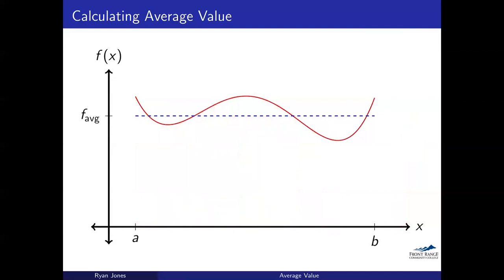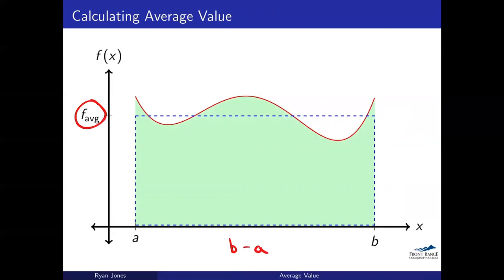If you were to take all the y-values for this function and averaged them, this is what you'd get — roughly the average height of the function. We can actually set up an integral and relate it to another area. I've got in green the integral of the function, and then in the blue dashed rectangle — that's just a rectangle with a width of b minus a and a height of f-average, which is that average value of the function.